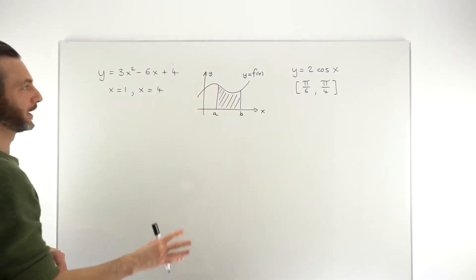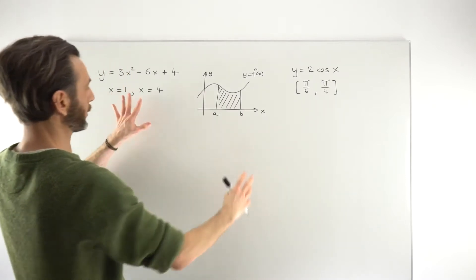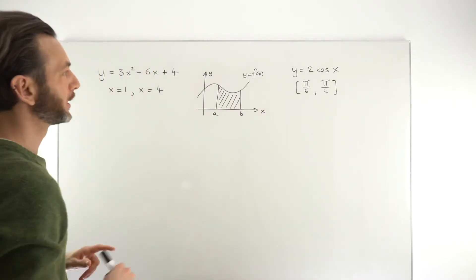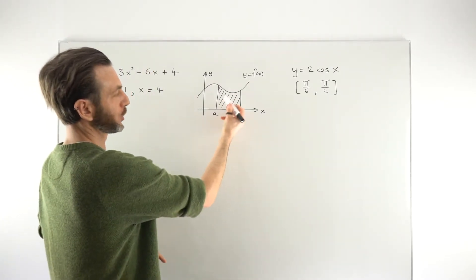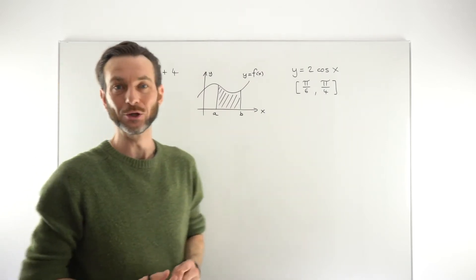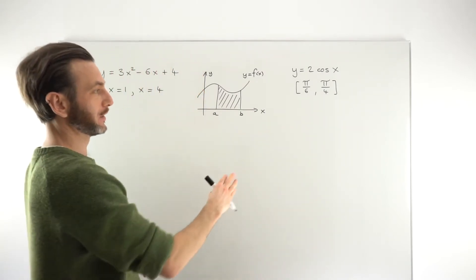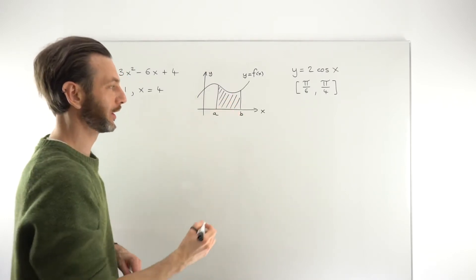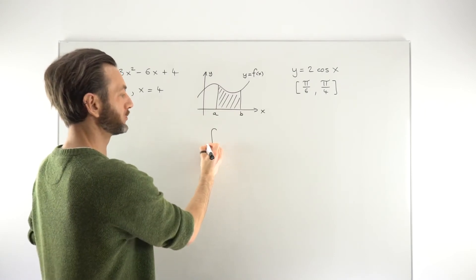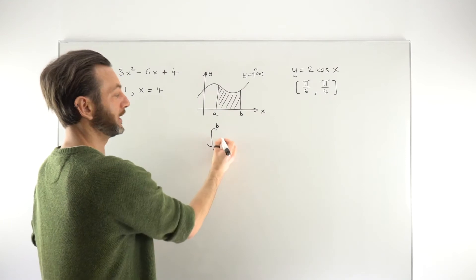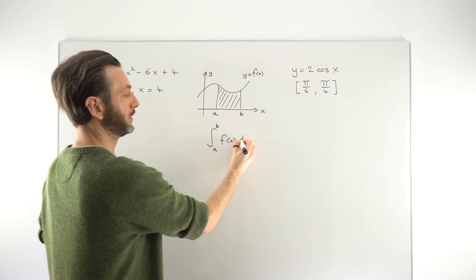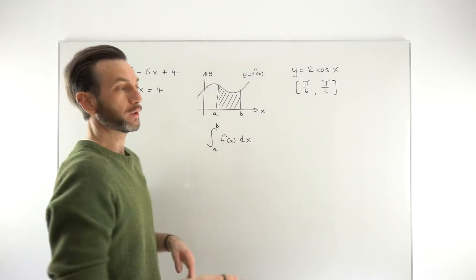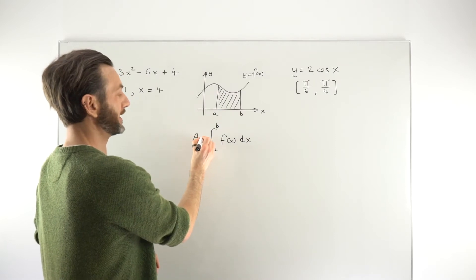So, what we're going to do in this class is have a quick chat about the theory, and then work two examples of slightly different types of function just to see how the process plays out. It turns out that to find this shaded area, all you have to do is set up a definite integral and evaluate it. Once you evaluate that definite integral and get your final answer, that answer is the area under that curve. In other words, if we set up the integral between the two limits — integral between A and B of f of x dx — whatever this evaluates to gives us the area.